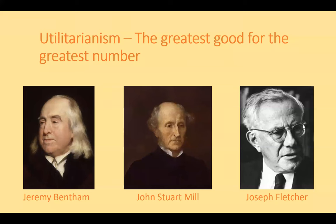Let's look at a second form of consequentialist ethics: utilitarianism. Utilitarianism tries to accomplish the greatest good for the greatest number. This ethical approach was developed and advocated by Jeremy Bentham, John Stuart Mills, and Joseph Fletcher — also sometimes called consequentialism. Utilitarianism advocates the greatest good for the greatest number of people as determined by the end result. Thus, if by any means I can obtain the desired good result, that makes the action morally acceptable.